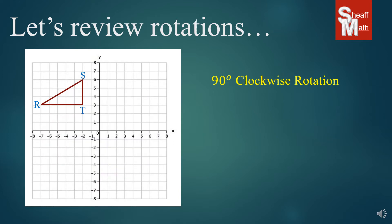Now that you know which way to go, we're going to be taking that 90 degrees — that's one quadrant over, 90 degrees clockwise. And so this is our rotation where it lands. You'll notice that each of the corresponding points have a little apostrophe on them, and we call those primes — so R prime, S prime, and T prime.